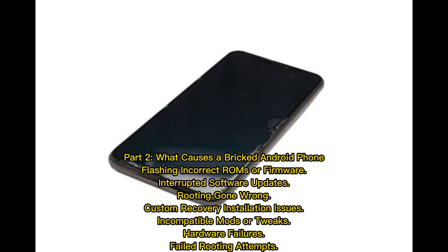Part 2: What causes a bricked Android phone? Causes include flashing incorrect ROMs or firmware, interrupted software updates, rooting gone wrong, custom recovery installation issues, incompatible mods or tweaks, hardware failures, and failed rooting attempts.